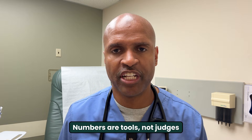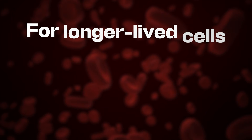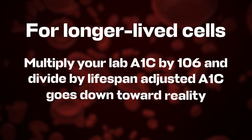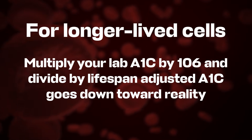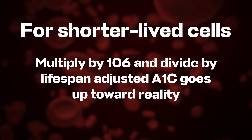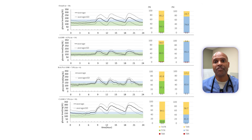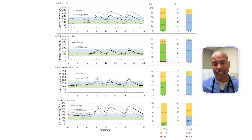Numbers are tools, not judges. Use them wisely and they inform. Use them blindly and they intimidate. If your A1C surprised you, breathe. Use the calculation. For longer-lived cells, multiply your lab A1C by 106 and divide by lifespan — adjusted A1C goes down toward reality. One formula, two directions. And if you don't know your lifespan, let your CGM-derived GMI and a short-window lab guide you.